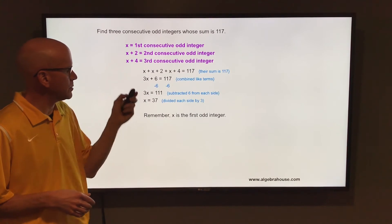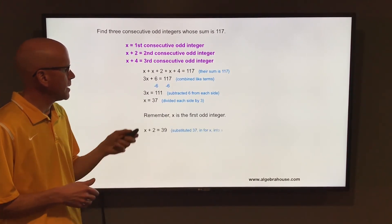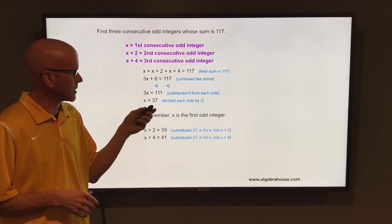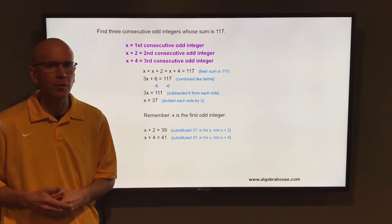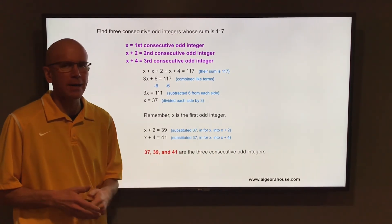Now to find the other two, just substitute 37 in for x into x plus 2 and x plus 4. So if x is 37, x plus 2 would be 39. And if x is 37, x plus 4 would be 41. So the three consecutive odd integers are 37, 39, and 41.